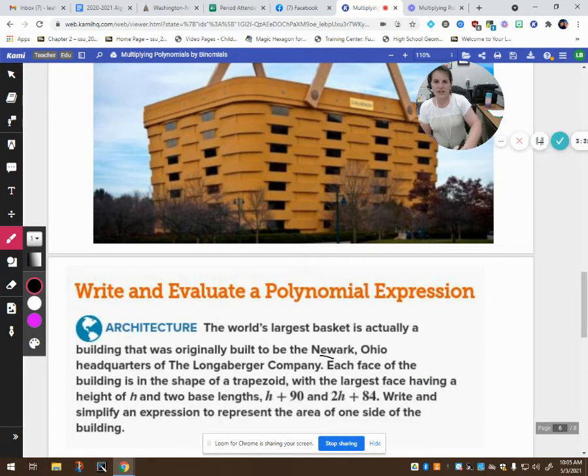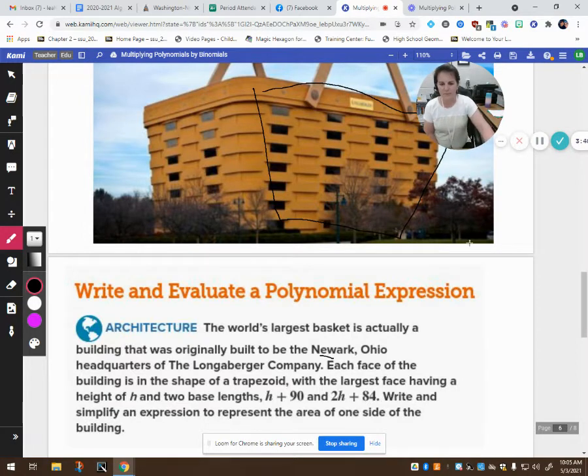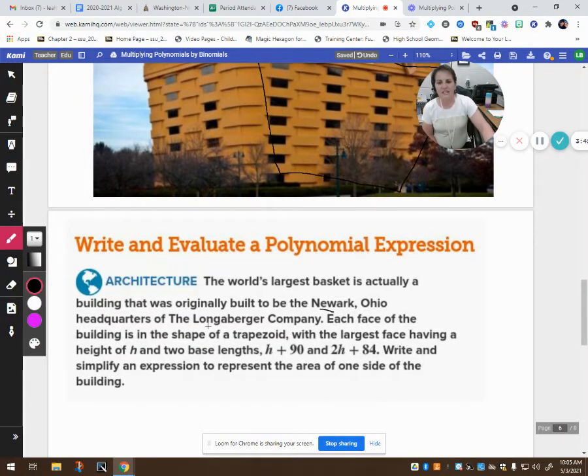So if you look at this, you can tell that the face of it is a trapezoid. It's a little bit smaller on the bottom, a little bit longer on the top. So each face of the building is in the shape of a trapezoid, with the largest face having height of H and two base lengths of H plus 90 and 2H plus 84.